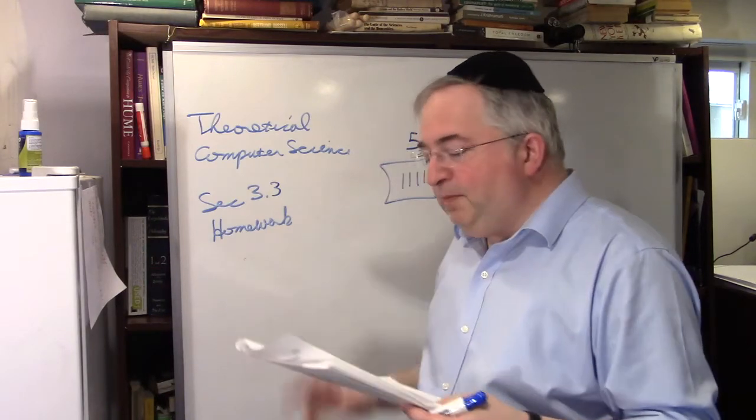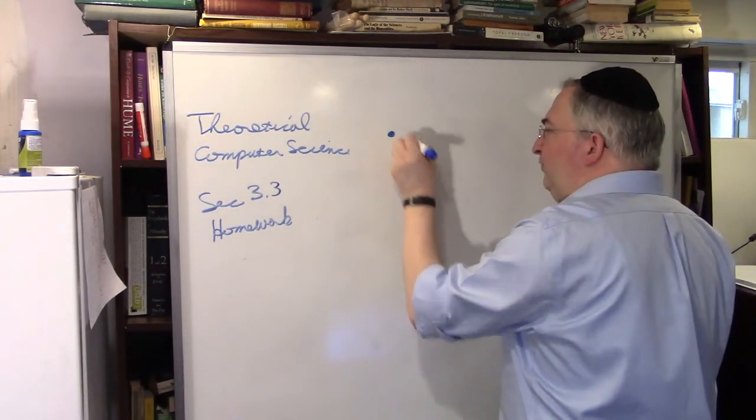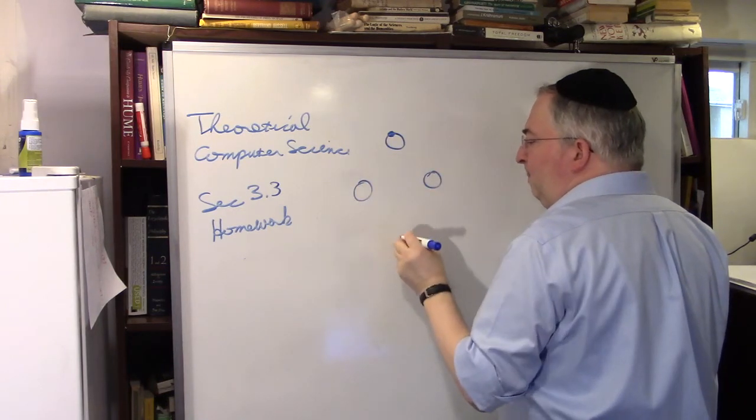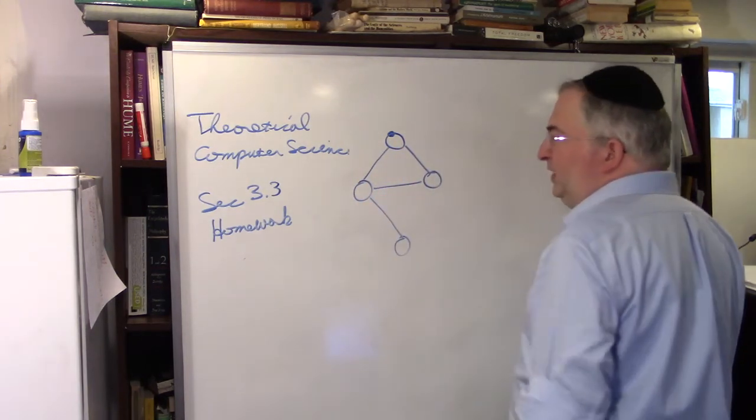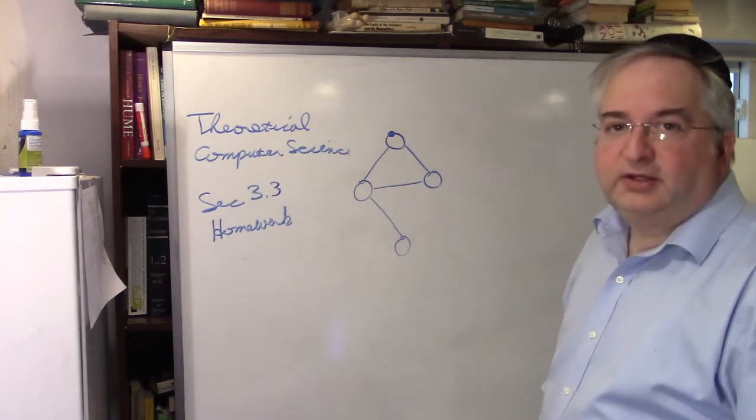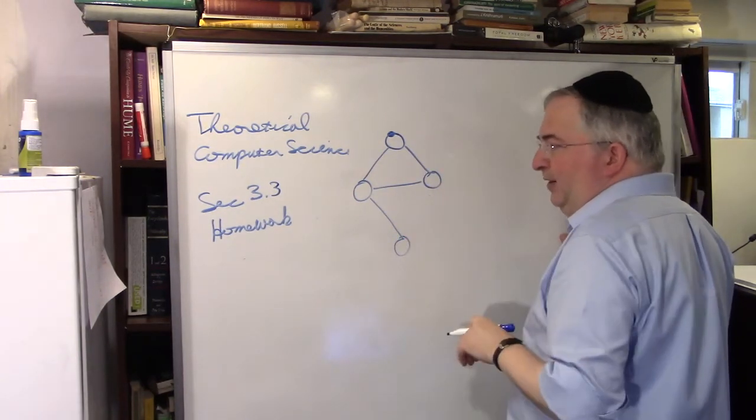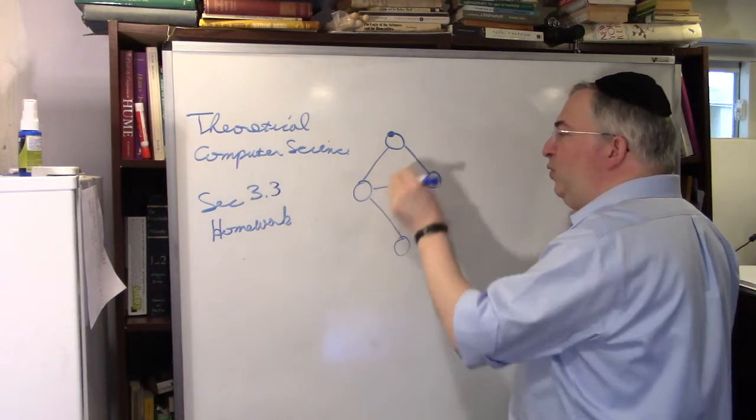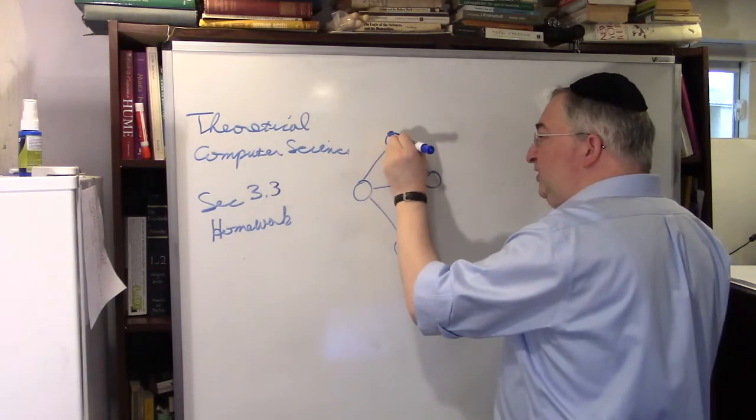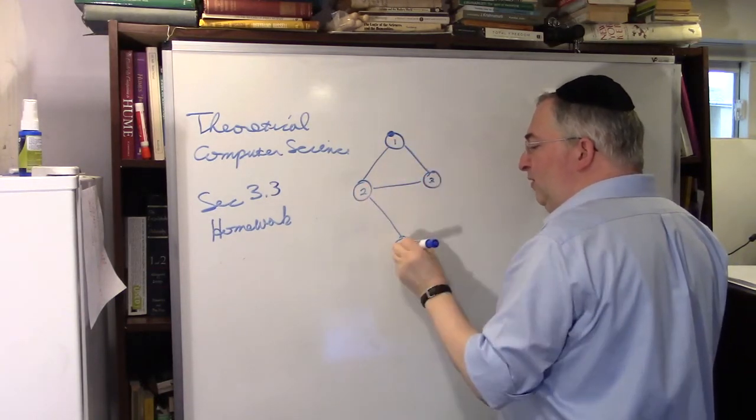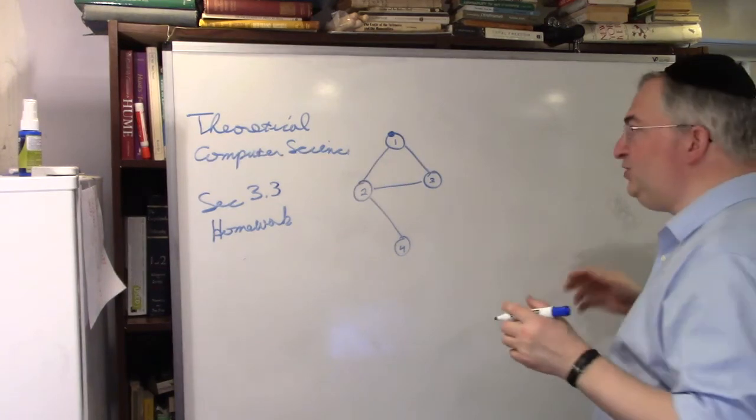Let's do the first one. Given encoding of a graph, use the minimal amount of space. Let's think of a graph. Here's a typical graph. This is an undirected graph. We could talk about directed graphs also. How can we make this into a string?